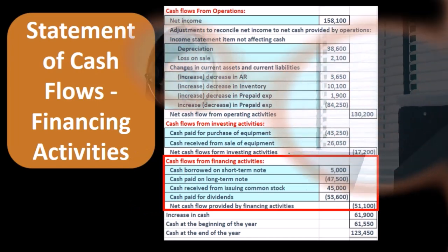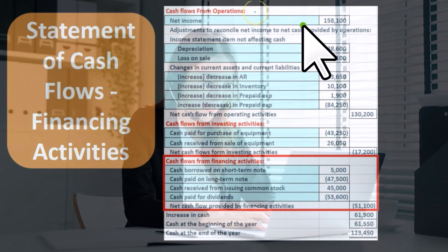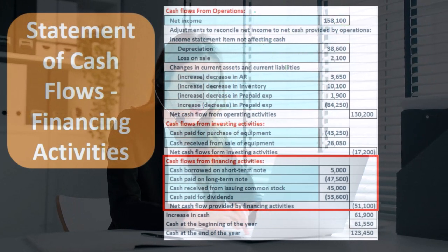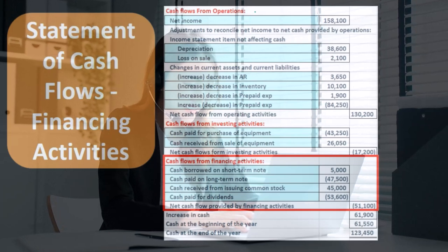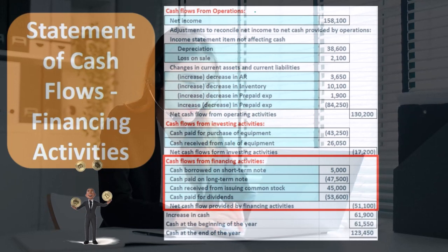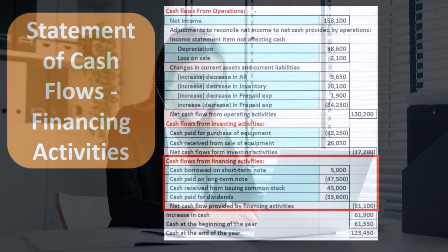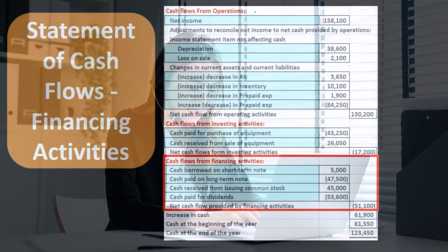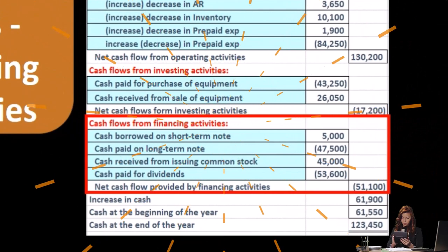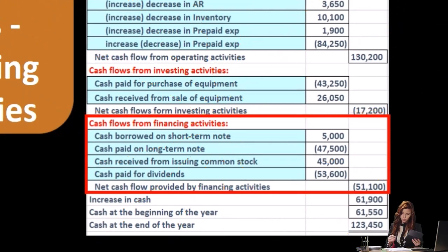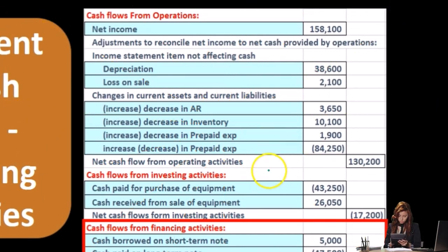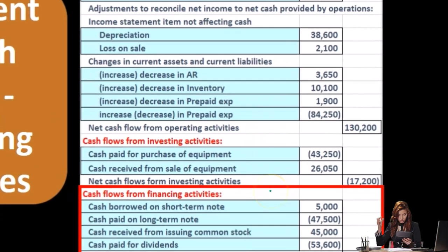When we think about the statement of cash flows, we often concentrate on the cash flows from operating activities because that's the largest part. It's basically the income statement converted from an accrual basis to a cash basis. A direct method would be a more direct conversion, while the indirect method — shown here — takes net income and converts it from accrual to cash basis. The investing and financing activities will be the same whether we use a direct or indirect method.